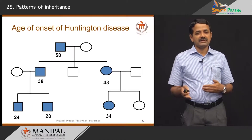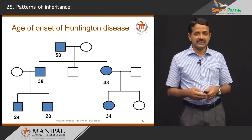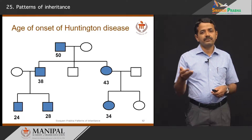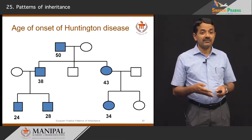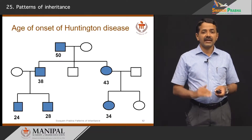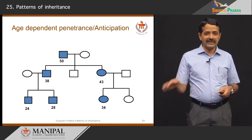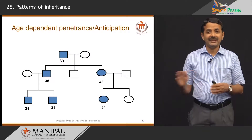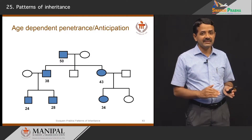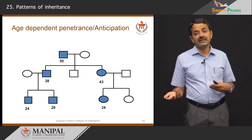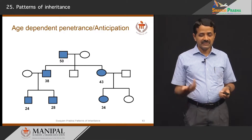This pedigree shows an autosomal dominant condition, Huntington disease. I have written the age of onset for each affected individual. The grandfather has onset at 50, somebody at 38, somebody at 43, somebody at 34 — you can see that in subsequent generations, younger people are affected. This is called age-dependent penetrance, also known as anticipation, and it occurs with autosomal dominant triplet repeat disorders. A young person may appear non-penetrant early on, but will develop the disease later — this phenomenon is called anticipation.